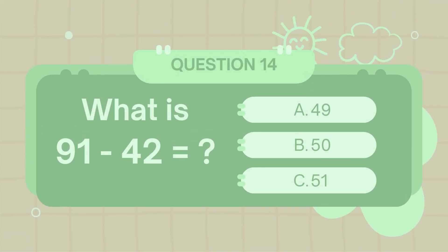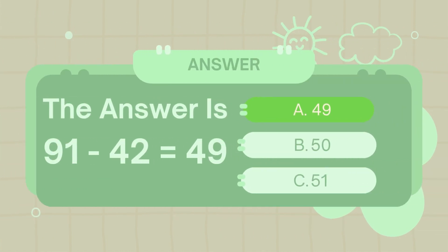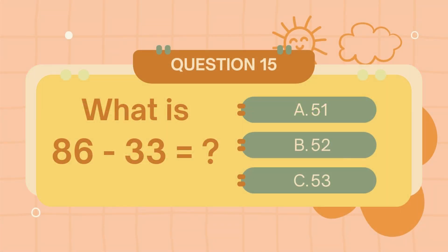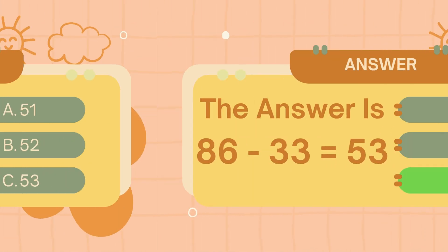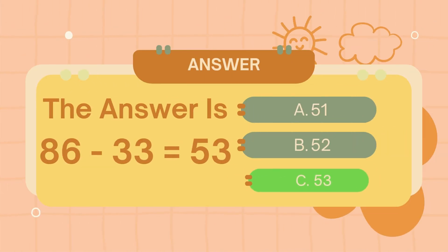What is 91 minus 42? The answer is 49. What is 89 minus 33? The answer is 53.